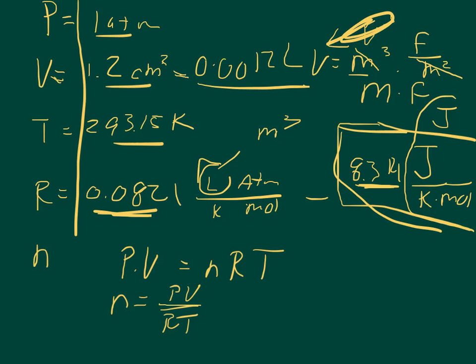So when we take the pressure times the volume, the pressure times the volume would be 0.0012 times 1 atmosphere, so it's going to be 0.0012 over 0.0821 times 293.15. That gives us the number of moles, N equals 4.986 times 10 to the negative 5th moles.